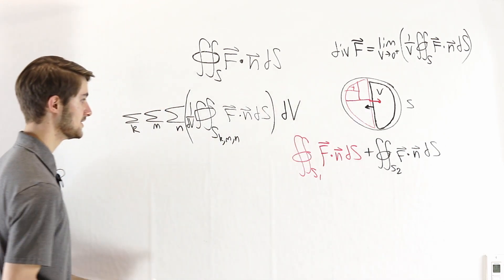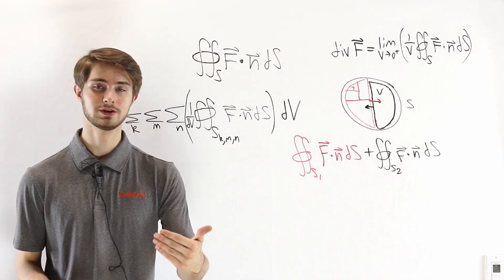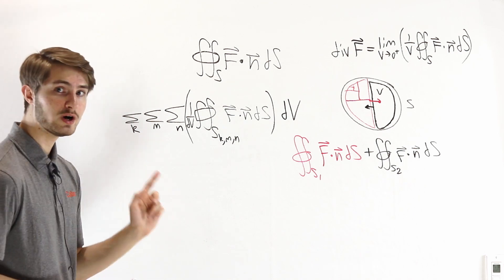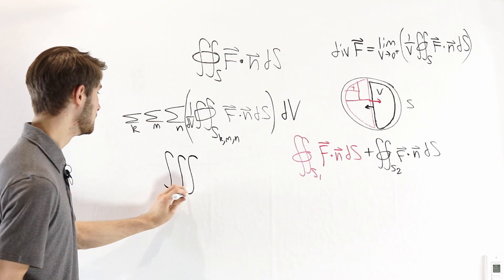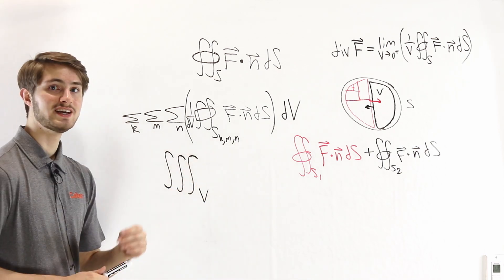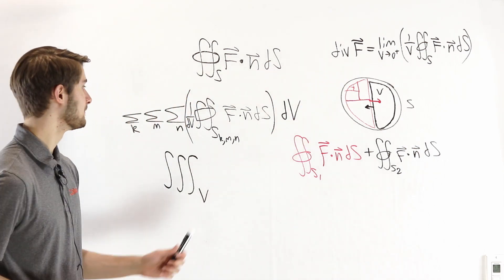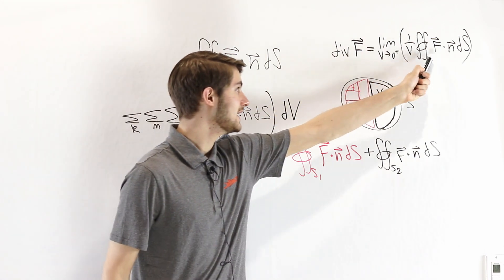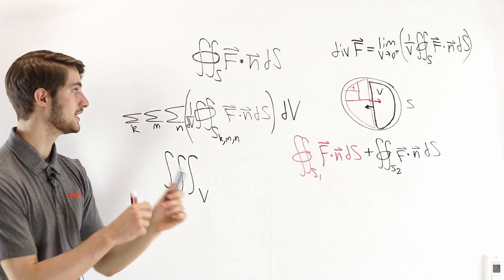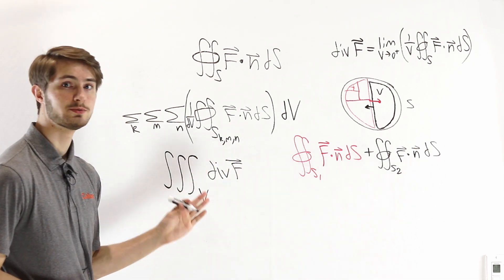We now have something that looks like a Riemann sum for a triple integral — a triple summation over a three-dimensional region of some value times the volume. To turn this into an actual triple integral, we take the limit as the volume of each region approaches zero. We get the triple integral over the entire original volume V. The expression inside looks very familiar: it looks like the formula for divergence — one over the volume times a closed surface integral of F dot n dS. So as dV approaches zero, this becomes the divergence of our vector field evaluated at a point, multiplied by dV.